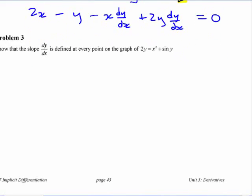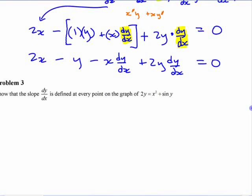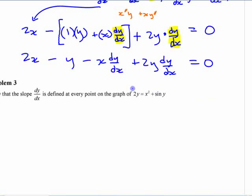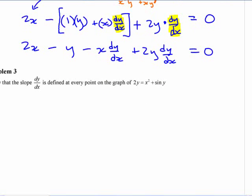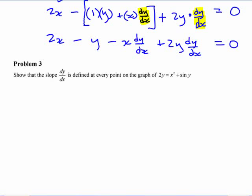2x minus y minus x times dy/dx plus 2y dy/dx equals 0. Now unfortunately, I can't chop this apart because it's one whole page. I'm going to have to continue down below here. I should in the future put it as two halves, but didn't do that this time. That expand thing, but this is a page that I printed in here, so it's not going to expand that.